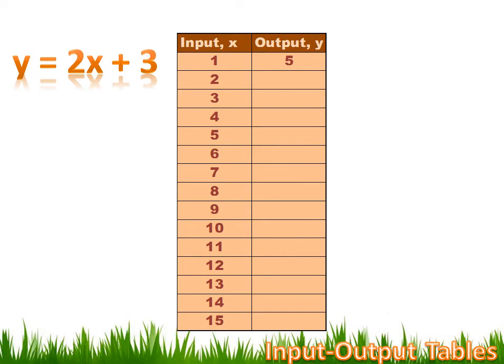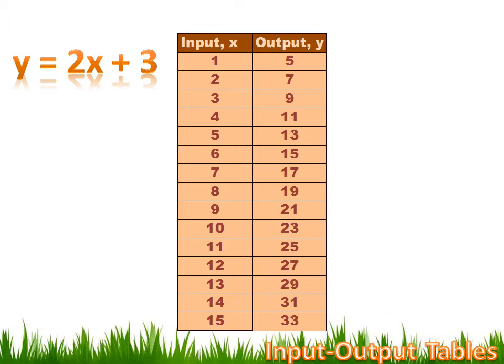For instance, if I put 1 into X, then I've got 2 times 1, or 2, plus 3. 2 plus 3 equals 5. If I put 2 in, then I've got 2 times 2, or 4, plus 3 equals 7. And I can do that for every number in the input-output table, and come up with a resulting Y for every X between 1 and 15.